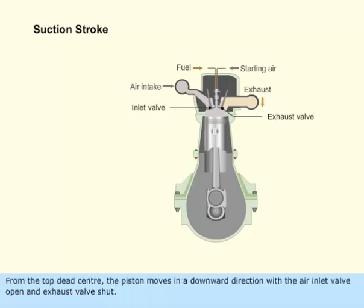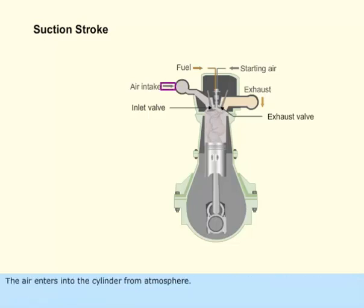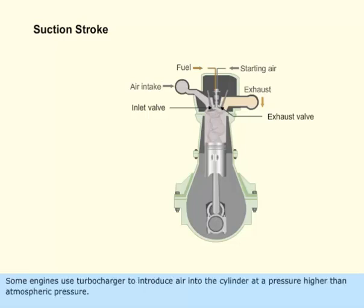From the top dead center, the piston moves in a downward direction with the air inlet valve open and exhaust valve shut. The air enters into the cylinder from atmosphere. Some engines use a turbocharger to introduce air into the cylinder at a pressure higher than atmospheric pressure.